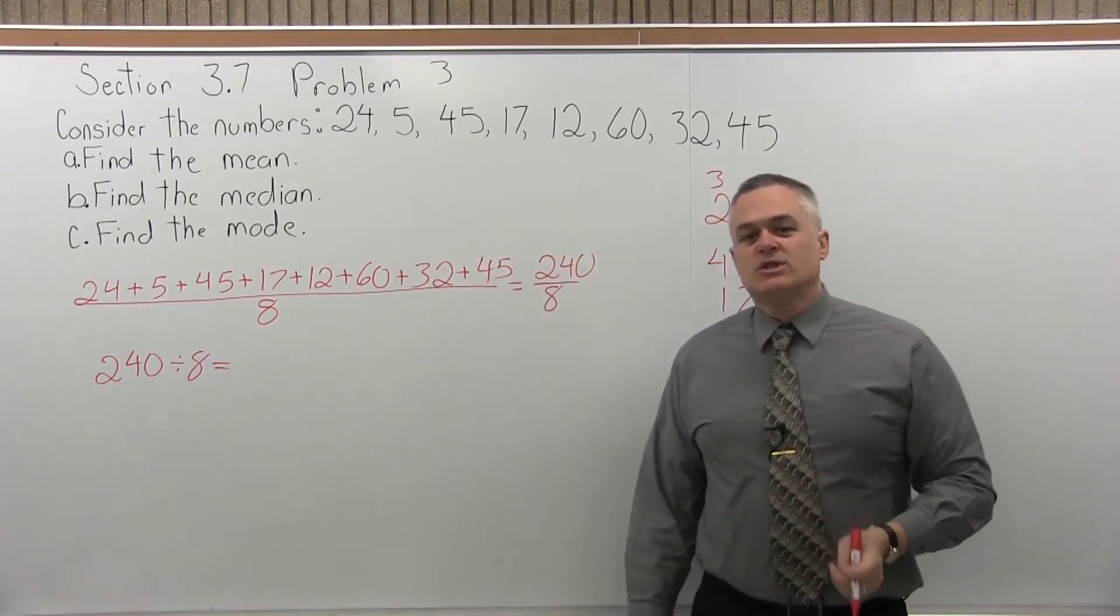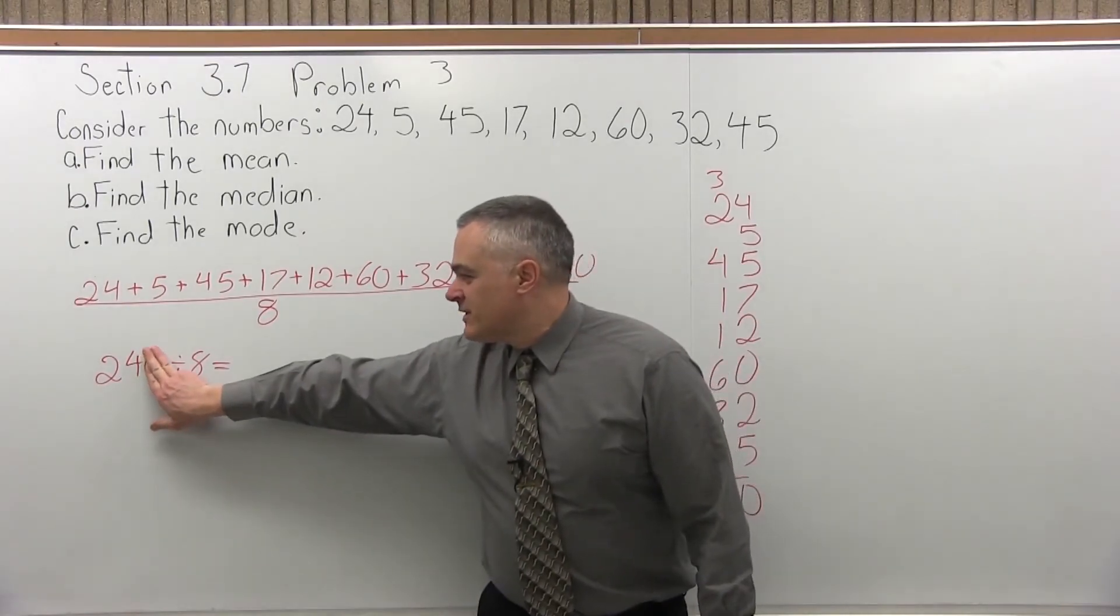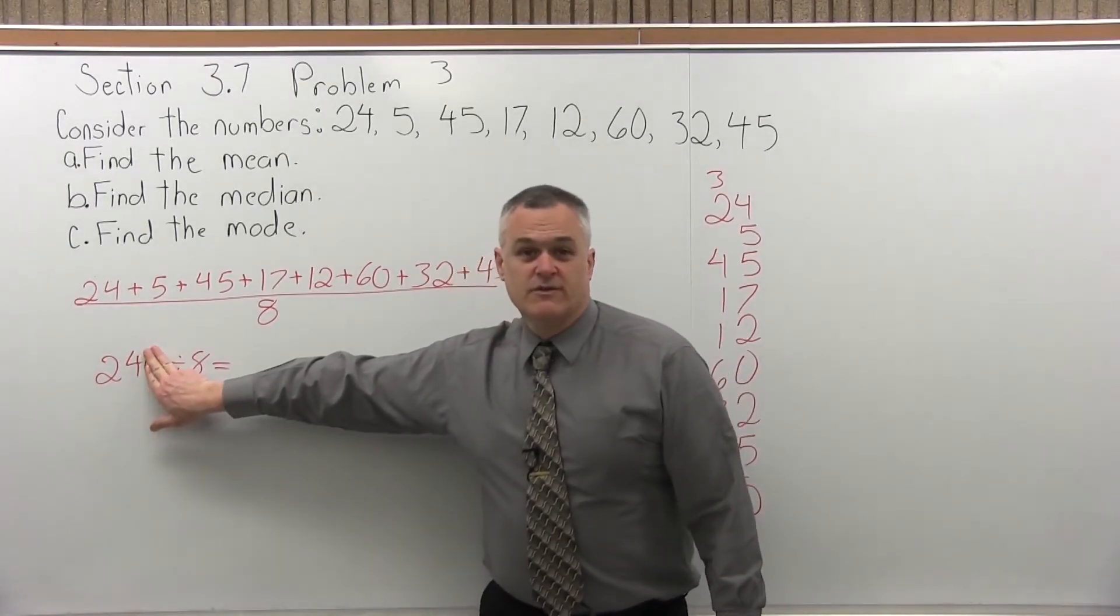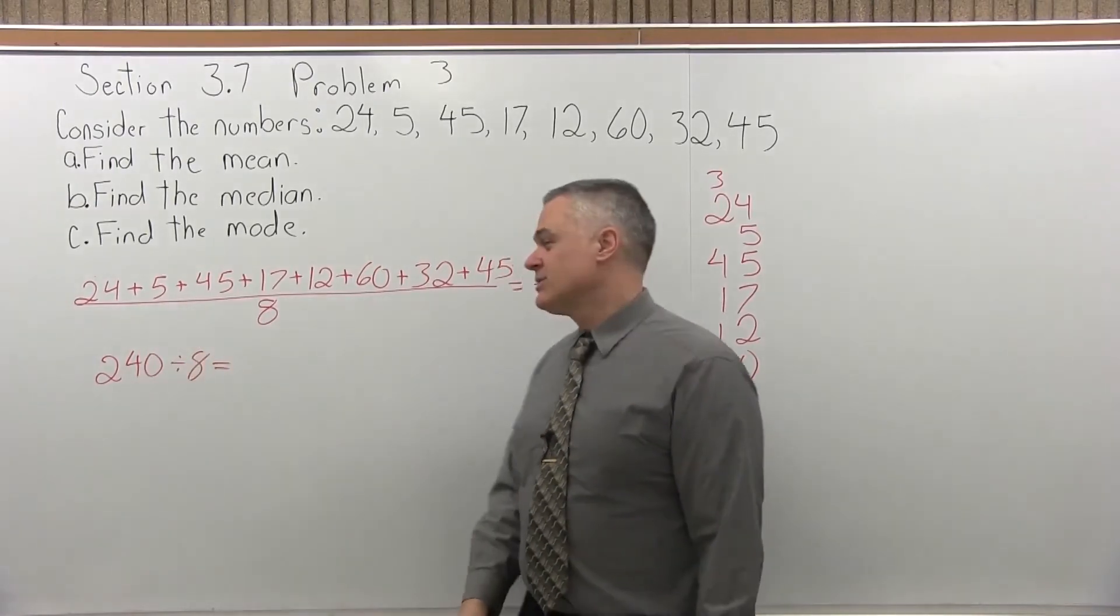Now, this one, I can do the division actually without writing it out because 240 is big, but if I just ignore the 0, 24 divided by 8 is 3, put the 0 back, 30. So the answer will come out to 30.